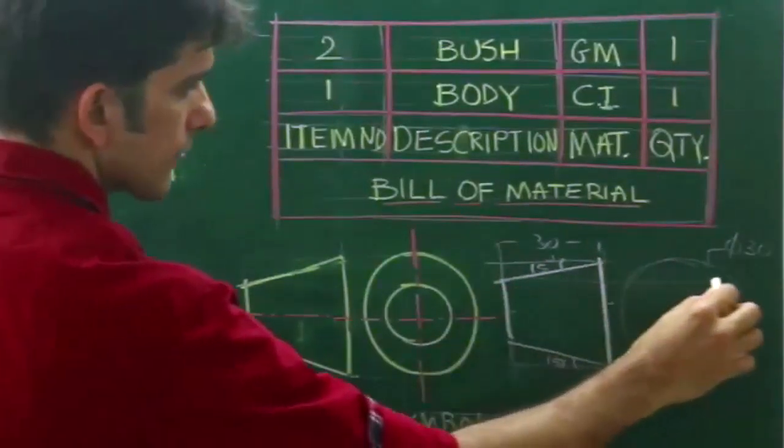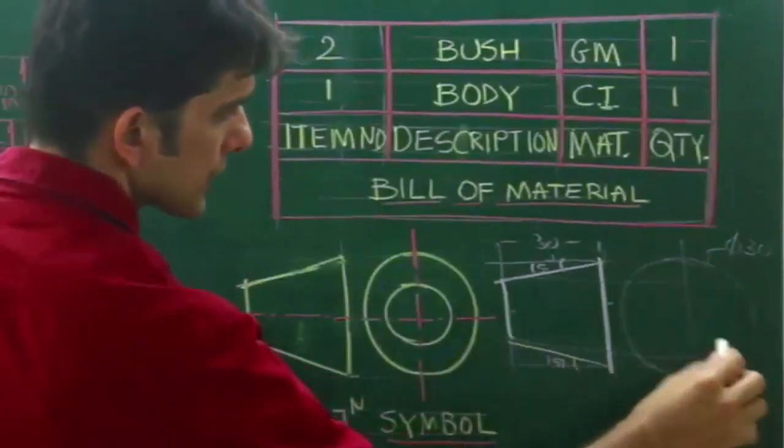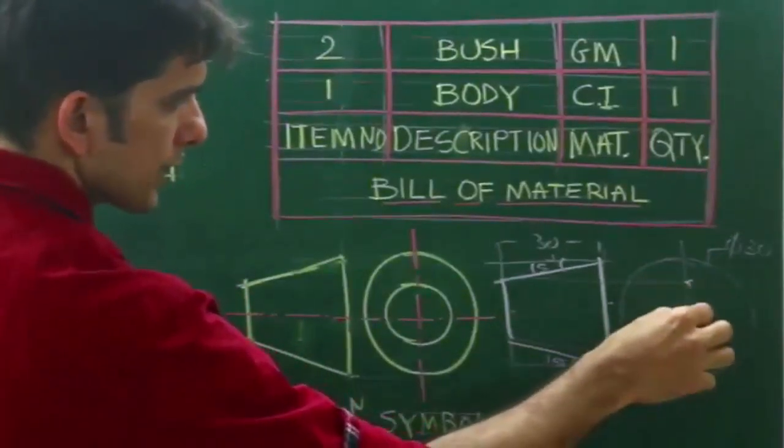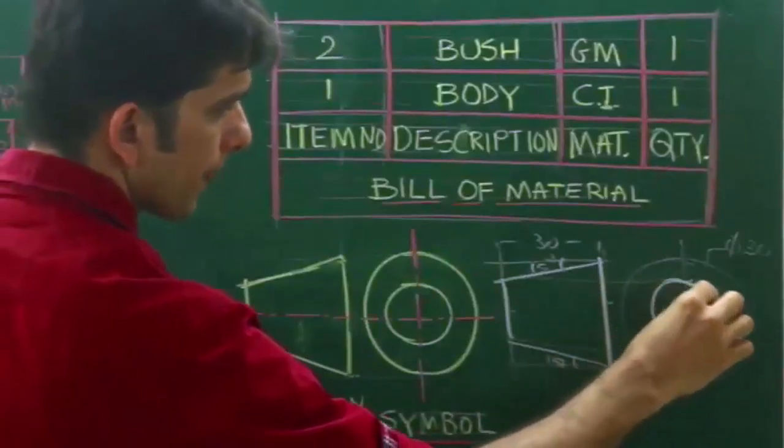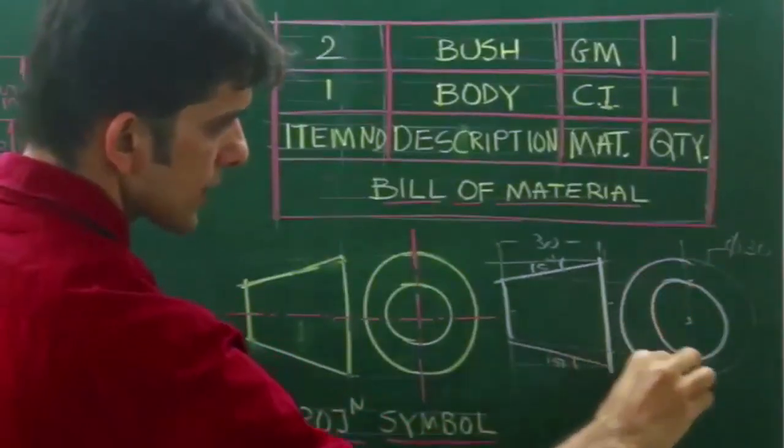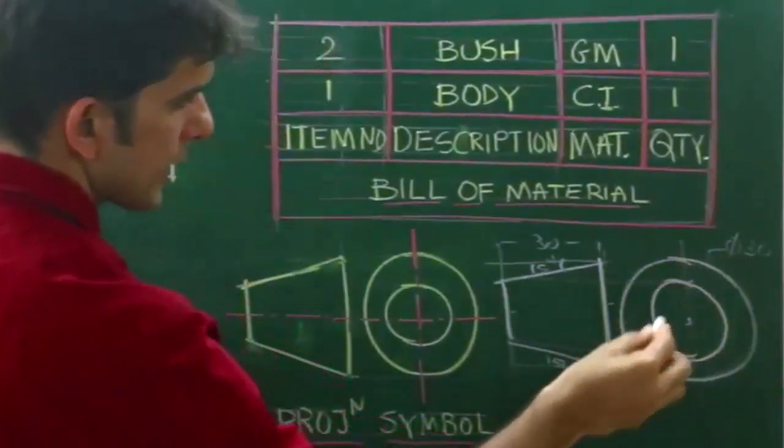Now from here you extend, so wherever it will meet, from center you can draw a circle, this is our projection symbol first angle method.